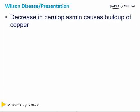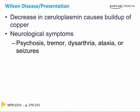Wilson's disease is an abnormally decreased copper excretion from a decrease in ceruloplasmin, causing buildup of copper in the liver, kidney, red blood cells, and nervous system. Neurologic symptoms that can occur include psychosis, tremor, dysarthria, ataxia, or even seizures.